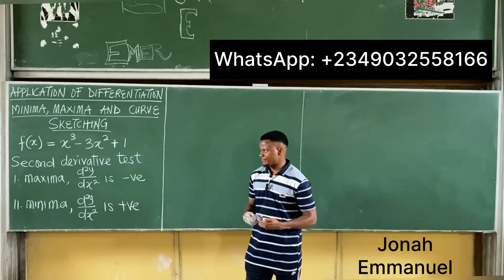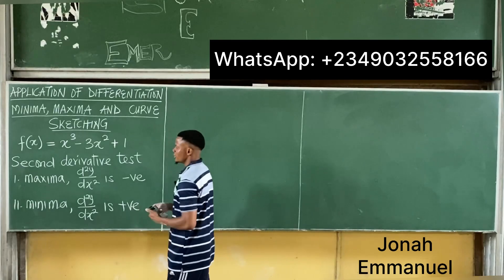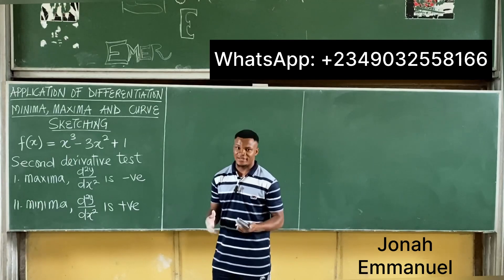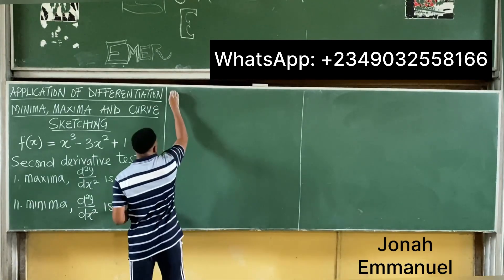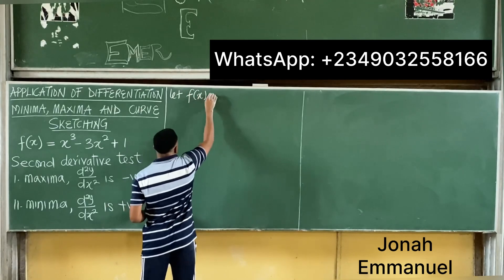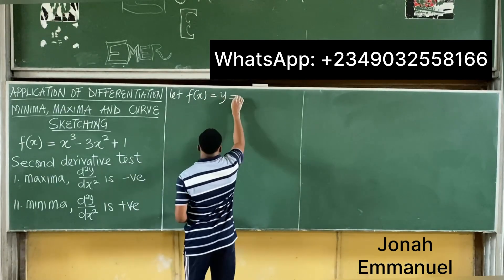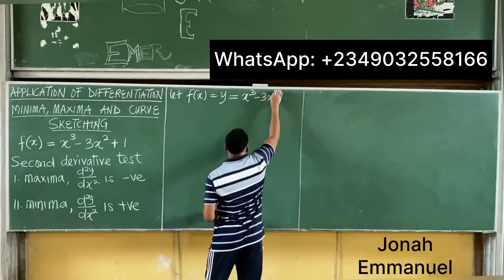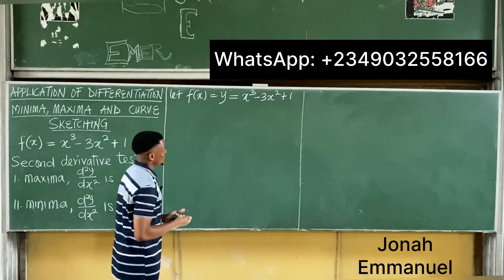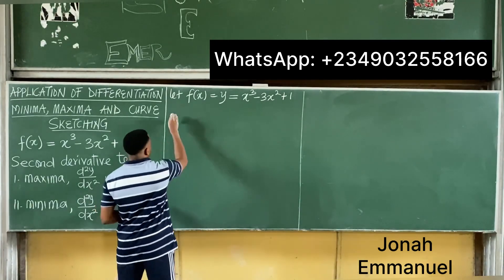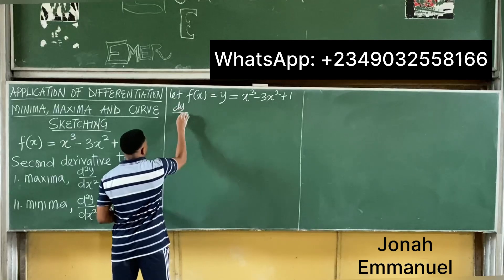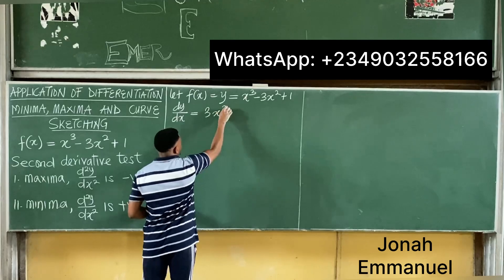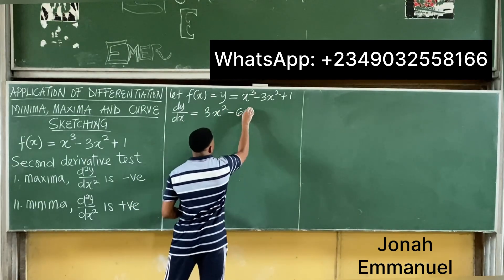Let's get minima and maxima. Our first task is to find the value of f prime of x. Since we are used to dy/dx, let f(x) be equal to y, and that's equal to x cubed minus 3x squared plus 1. So for turning point, let's get dy/dx, which equals 3x squared minus 6x.